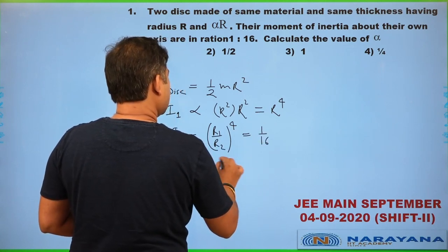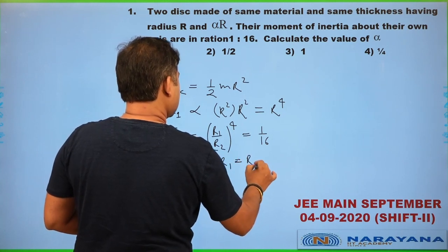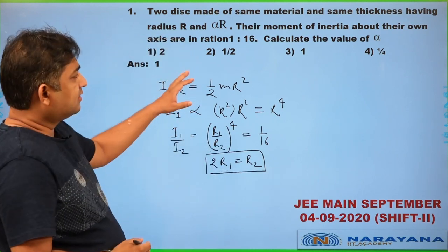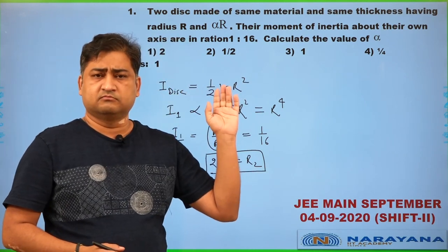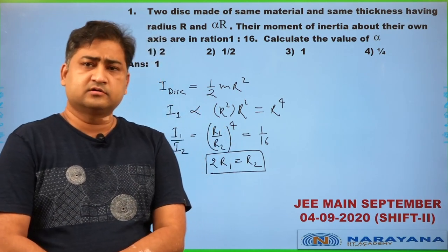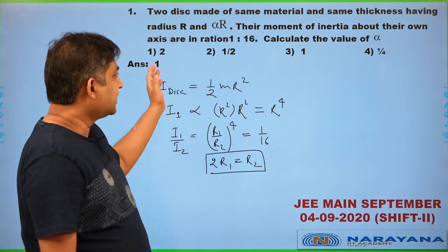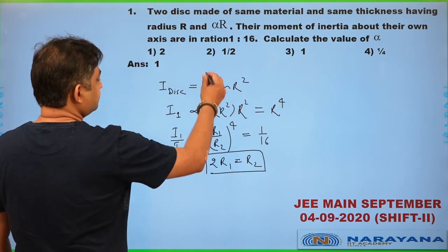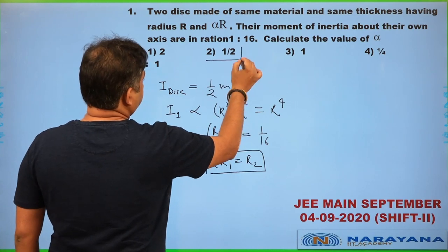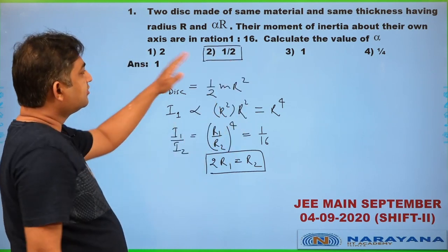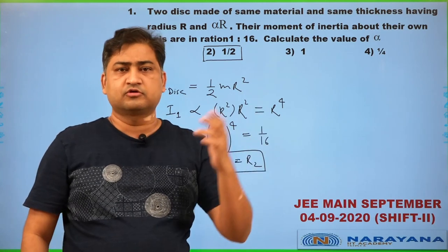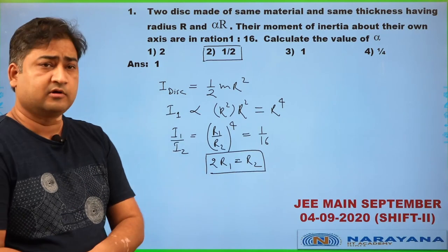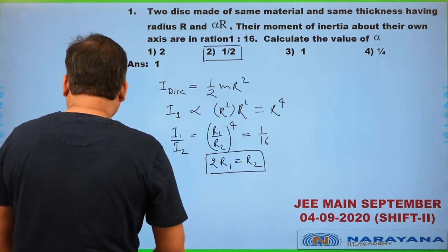r₁ into 2 is r₂. This question is mostly based on the memory of the student; we cannot claim very heavily on the options. According to their discussion, this option should be option number 2. Both 2 and 1/2 are given — it depends on the original content of the question, whether it was the ratio I₁/I₂ or I₂/I₁. Let us go to question number 2.